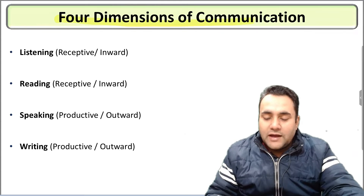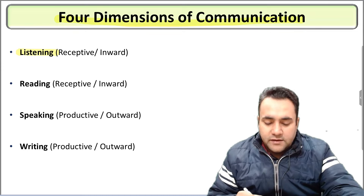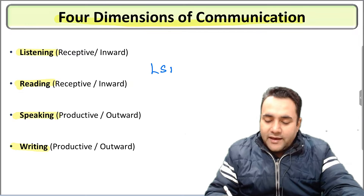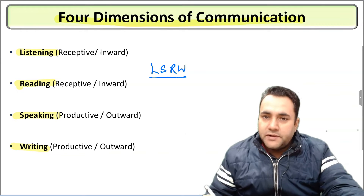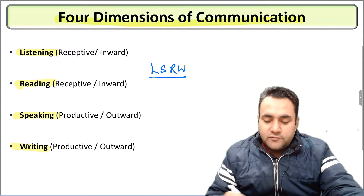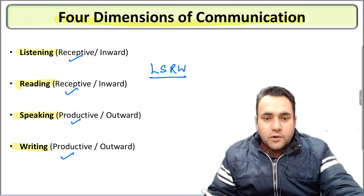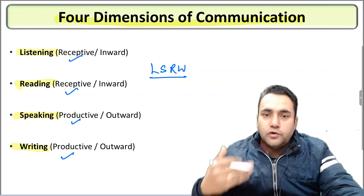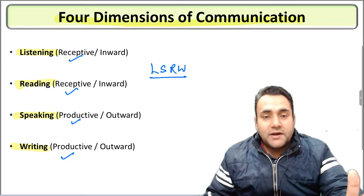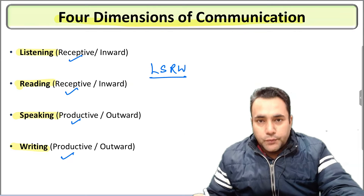First of all, you should understand that there are four dimensions of communication: number one is listening, number two is reading, number three is speaking, and number four is writing. Collectively, they are called LSRW — Listening, Speaking, Reading and Writing. Listening and reading are receptive methods through which you gain information, while speaking and writing are productive and outward methods through which you deliver your communication. If you want to become a good communicator, you should be a good listener, a good reader, a good speaker, and of course, a good writer.